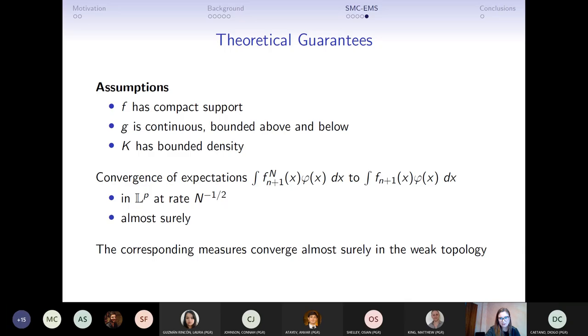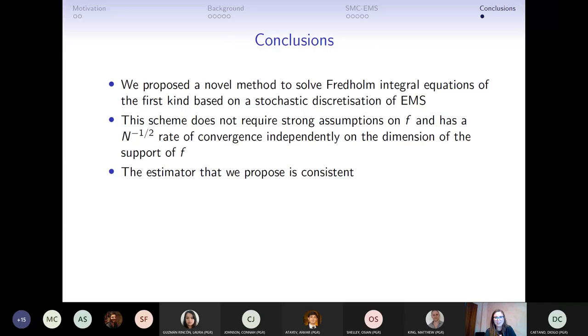Okay, so I think I'm almost running out of time. So just to wrap up, what we did in this project is to propose a new method to solve Fredholm integral equations of the first kind, which is based on a Monte Carlo discretization of the EMS recursion. The reason why we looked at this is because we can make less strong assumptions than those usually found in the literature while preserving the convergence rate of SMC. So it can work in higher dimension than the EMS recursion. And then we looked at the theoretical properties showing basically that the estimator that we have is converging in the limit almost surely. And yeah, that's all. Thank you very much. And if you want to know more, I'm very happy to take questions and there is also an arXiv preprint online.